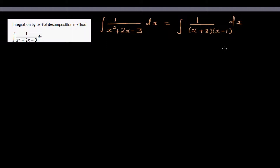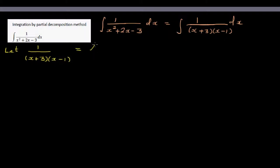In this form the expression is not integrable, so we need to split it into two fractions. Let's say 1 over (x+3)(x-1) is the same as writing A over x plus 3 plus B over x minus 1.